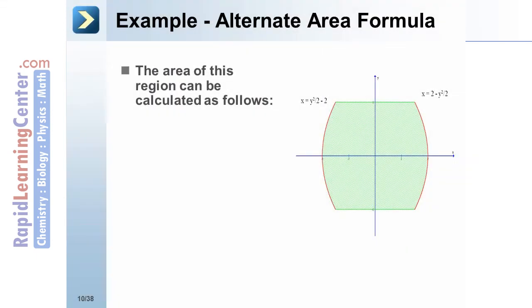The area of the region in the figure to the right can be calculated as follows: A = ∫[-1 to 1] [(2 - y²/2) - (y² - 2)]dy, that is the right curve minus the left curve. Evaluating this integral yields 22/3 as an answer.